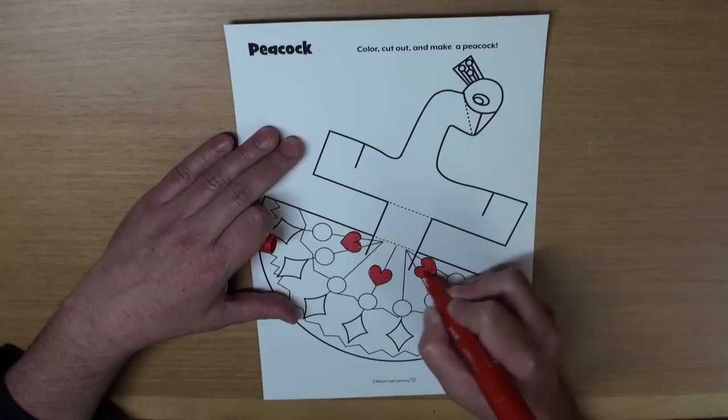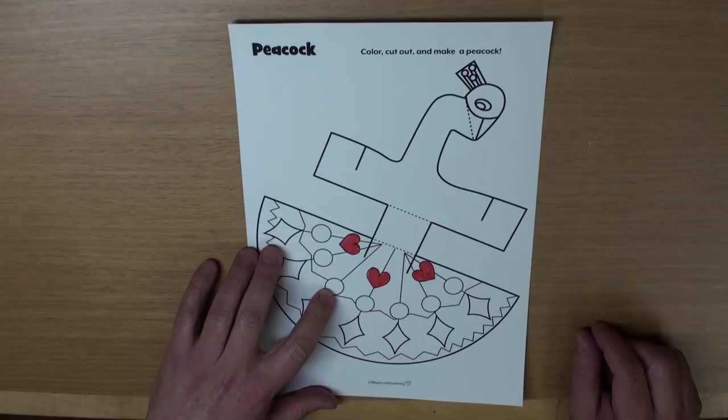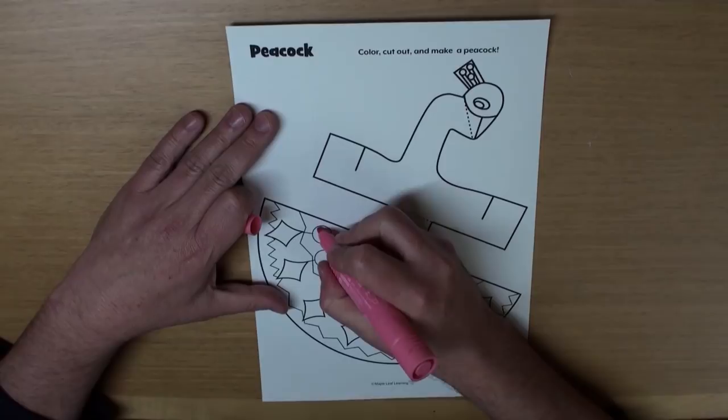What's the next shape? Yeah, it's a circle. And how many circles are there? That's right. There are seven. And I'm going to color those pink. Yeah!